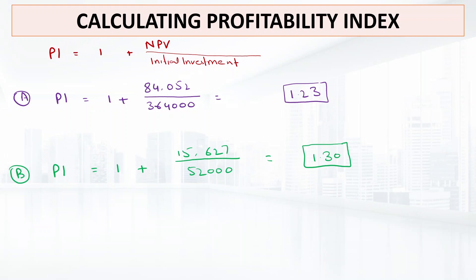To conclude: using the payback period, discounted payback period, IRR, and profitability index, we accept Project B. However, according to the NPV criterion we accept Project A, which yields a higher net present value. Since NPV is considered a superior measure among capital budgeting criteria, we ultimately accept Project A as it yields the higher net present value.